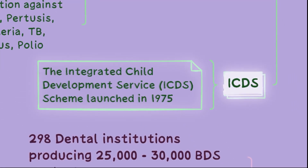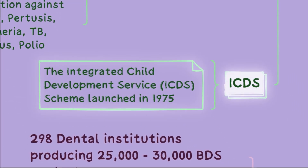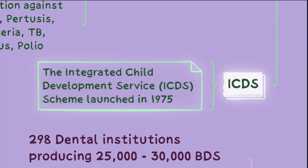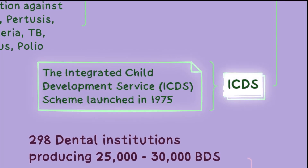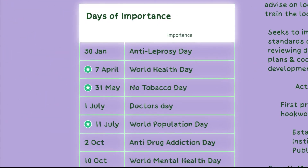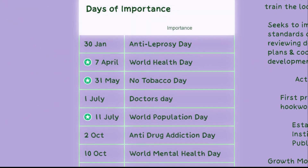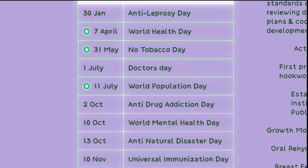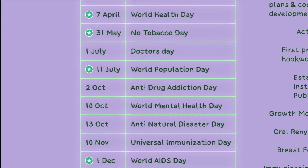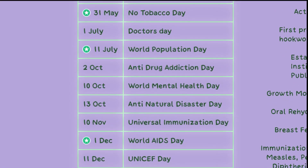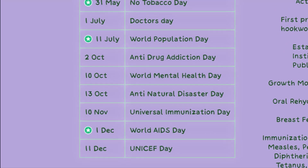The Integrated Child Development Service, or ICDS scheme, launched in 1975, focuses on improving the health and development of children in India. Health organizations have also marked certain days of the calendar to be celebrated as days related to health issues, aiming to create awareness among people. Some examples of such days are listed in the mind map.